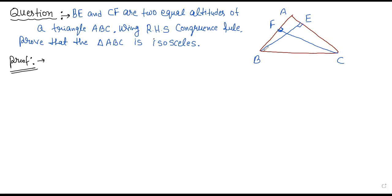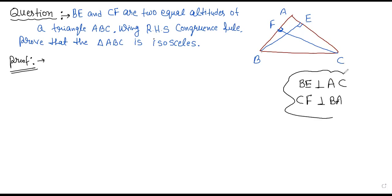Altitudes mean perpendicular. So BE is perpendicular on AC — this sign is for perpendicular — and CF is altitude, meaning perpendicular on BA. This is the given information. Now we start.